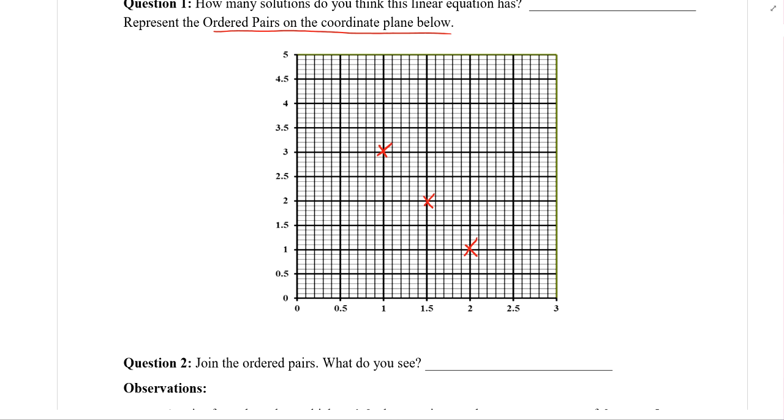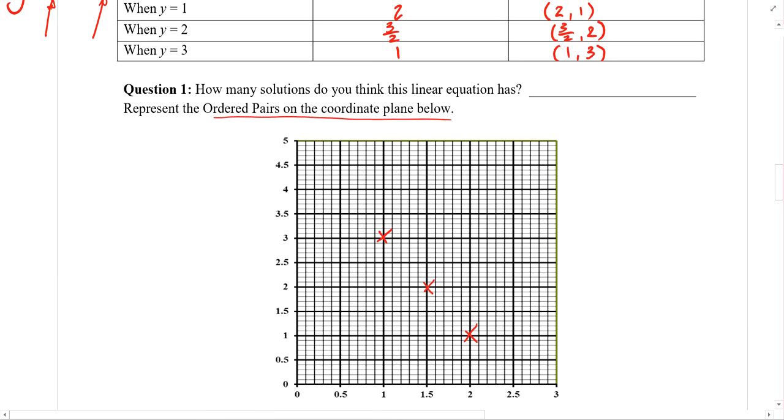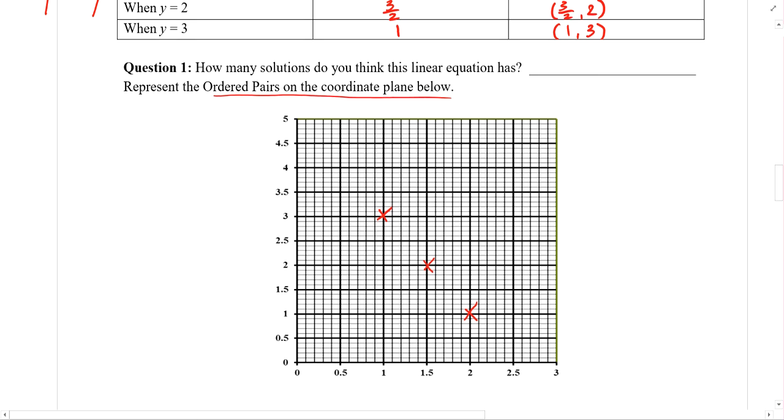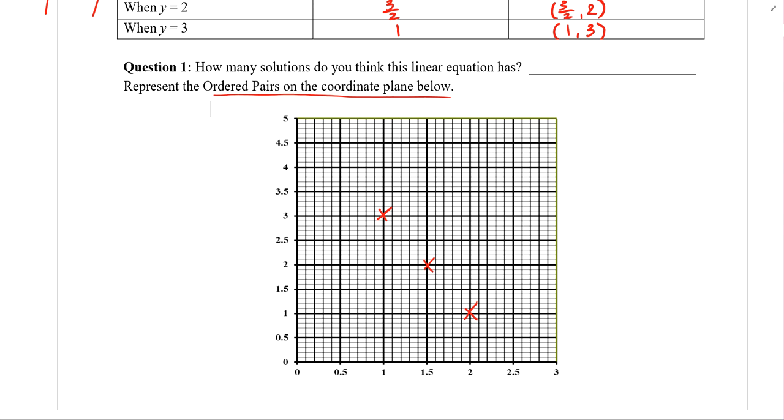So currently, these three crosses, they represent the three solutions that we currently know for the equation of 2x plus y equals to 5. Are there more than these three? Yeah, we can easily find out other ordered pairs. For example, when x equals to 2.5, y will be equal to 0. Work it out yourself. When x equals to, for example, 0.5, y will therefore be equals to 4. So we can include these ordered pairs into our graph.